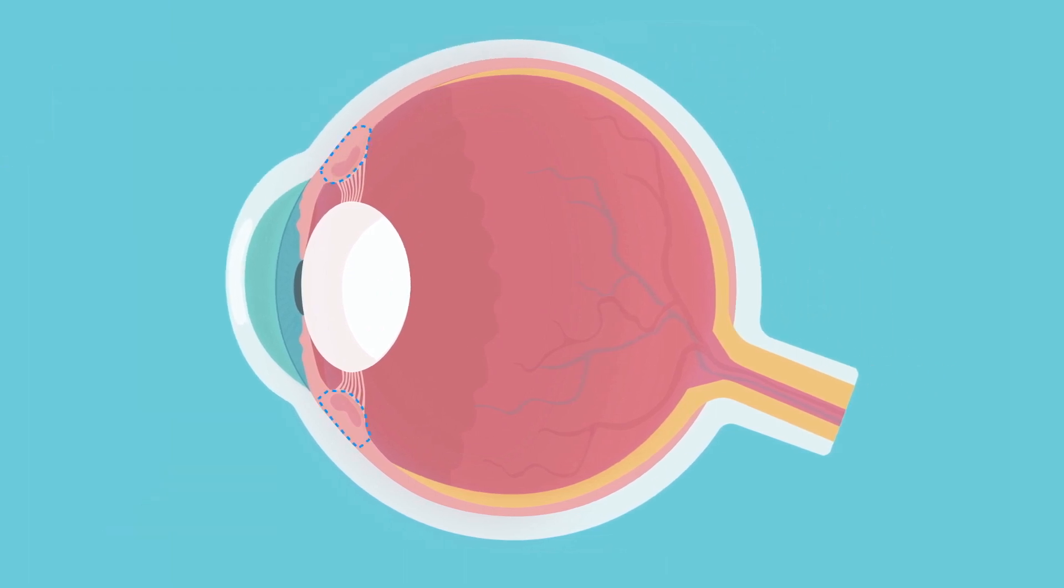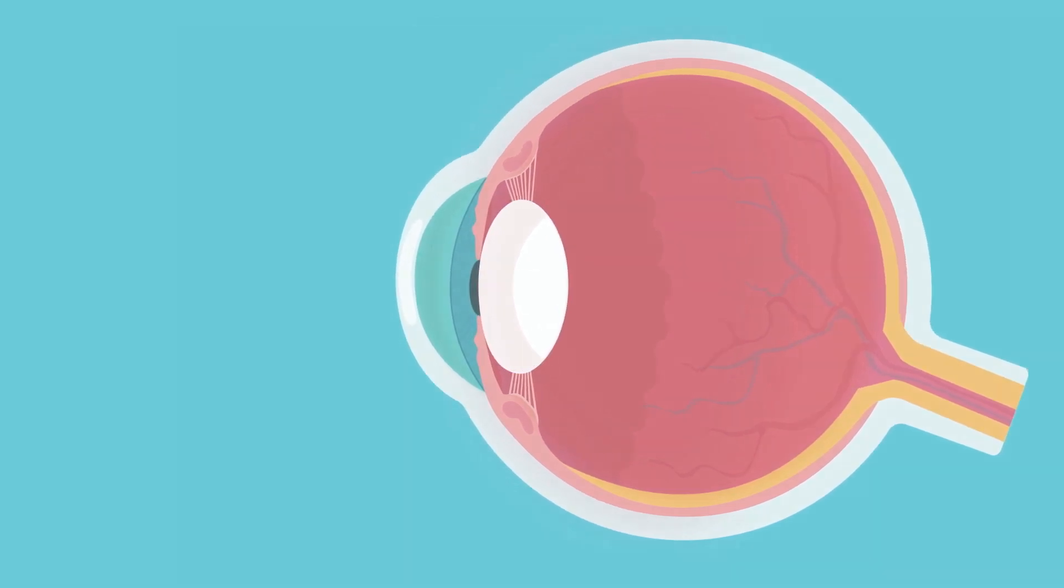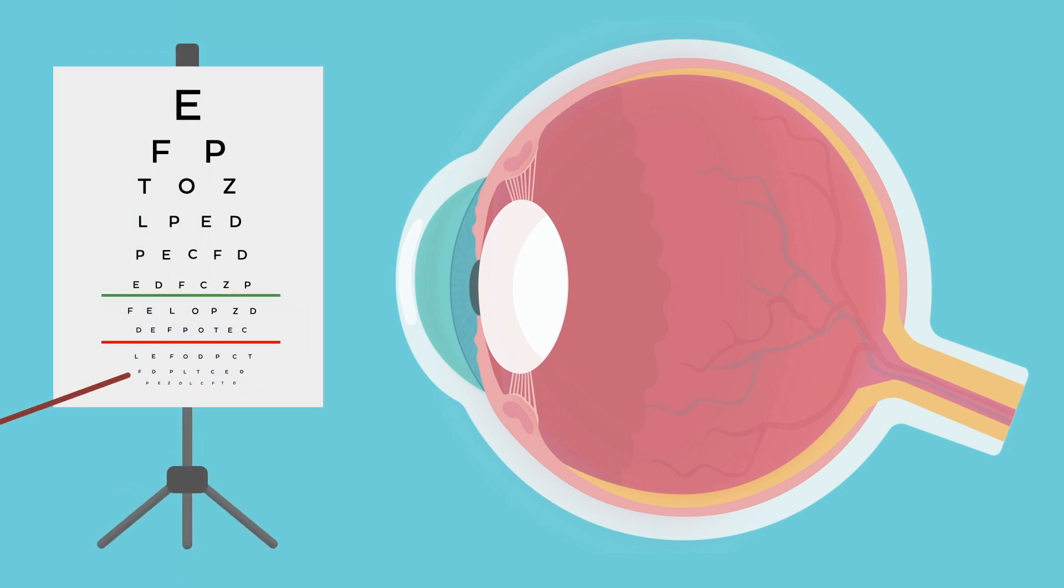On the other hand, when the ciliary body relaxes, it causes tension in the zonule fibers, which in turn pulls and flattens the lens. That is ideal for focusing on distant objects.